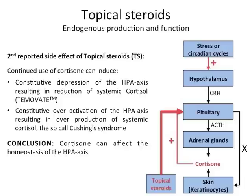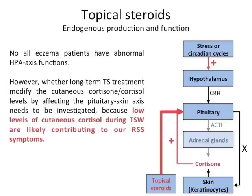Other reported side effects of topical steroid use include: continued use of cortisone can induce constitutive depression of the HPA axis, resulting in reduction of systemic cortisol, as demonstrated for Team of Eight; or constitutive over-activation of the HPA axis resulting in over-production of systemic cortisol — the so-called Cushing's syndrome. Therefore, cortisone can affect the homeostasis of the HPA axis. Luckily, not all eczema patients have abnormal HPA axis functions. However, whether long-term topical steroid treatment modifies cutaneous cortisone and cortisol levels by affecting the pituitary-skin axis needs to be investigated, because low levels of cutaneous cortisol during topical steroid withdrawal are likely contributing to red skin syndrome symptoms.